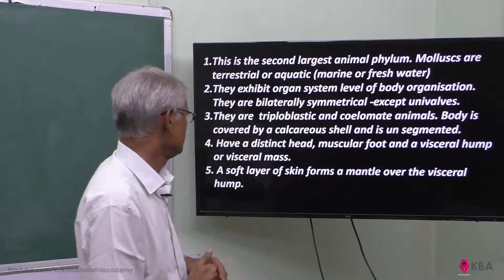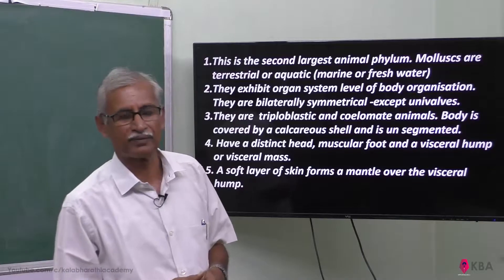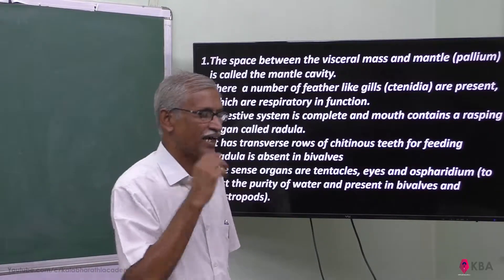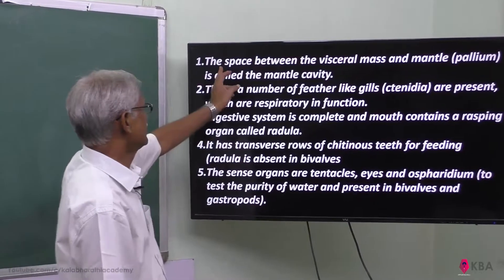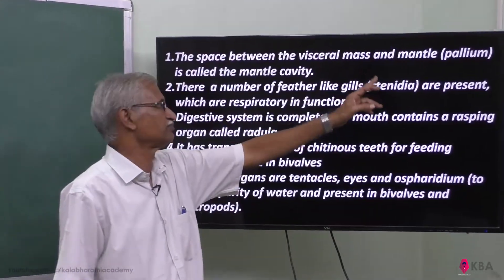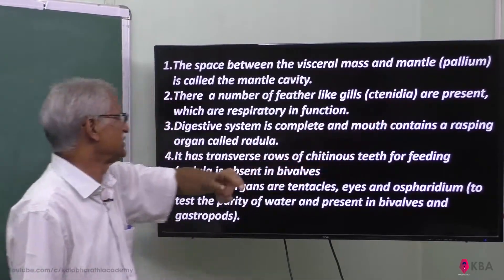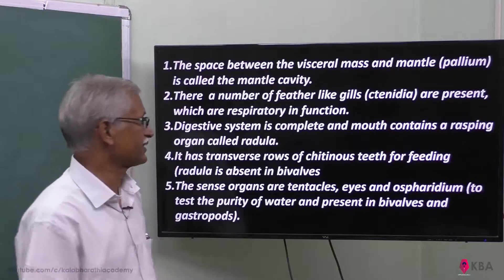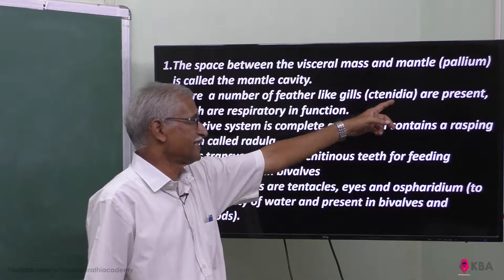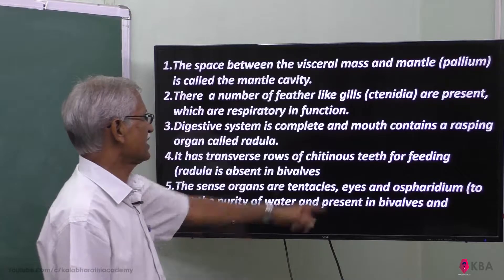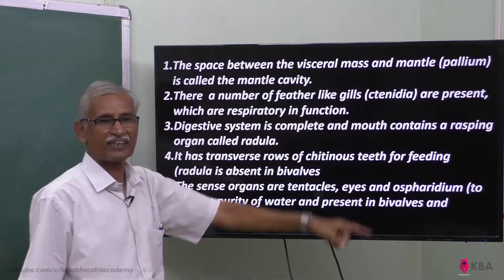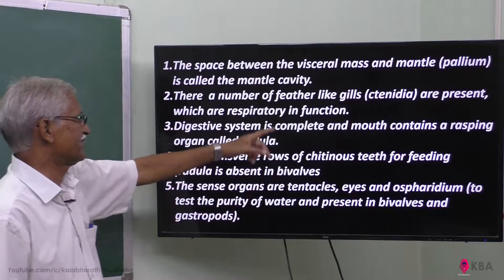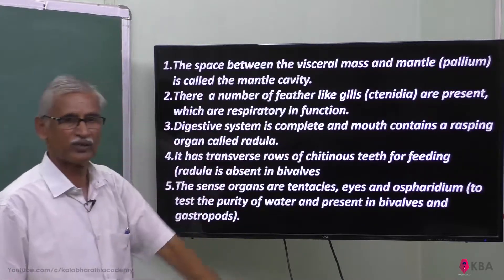That layer is called the mantle. On the mantle, there is a space between the visceral mass and the mantle — that space is called the pallium, also known as the mantle cavity. In the mantle cavity, there are ctenidia, which are feather-like gill structures that act as respiratory organs.